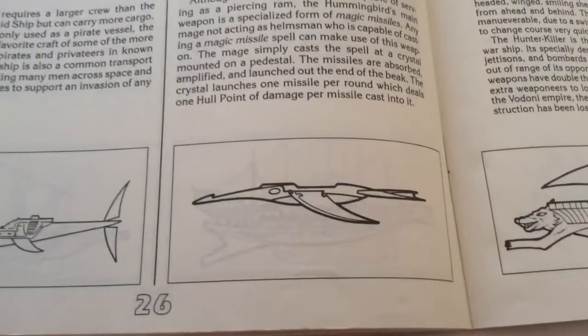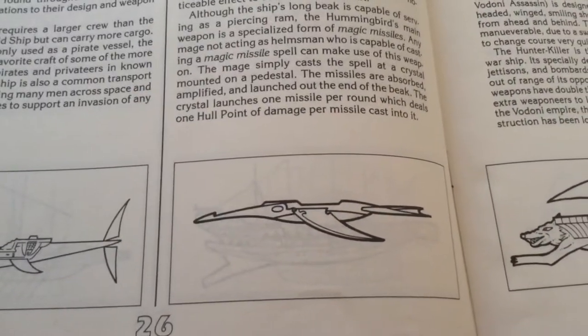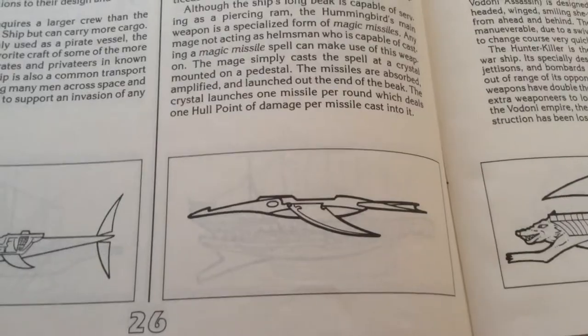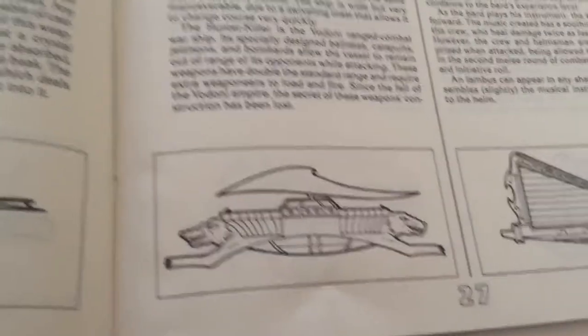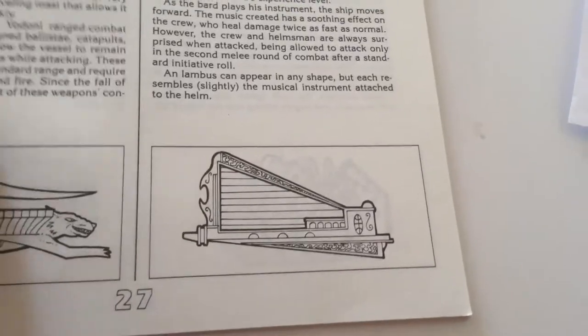A hammer ship. This is a unique ship from the crystal spheres module. That's a vodani ship from that module. Here's a ship that the arcane make for bars.